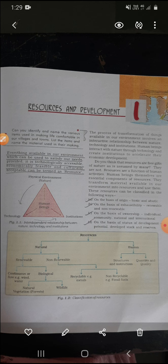Natural resources have two parts: renewable and non-renewable. Renewable resources are those which can be renewed again, which renew themselves — they can be reused. In this there are two parts: continuous or flow, like wind or water, which renew on their own according to time. Biologically, those which have life — like animals give birth to their babies — that process is called biological renewable. Natural vegetation, forest, and wildlife — these two come under biological.